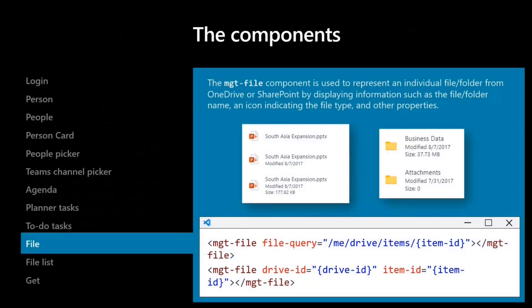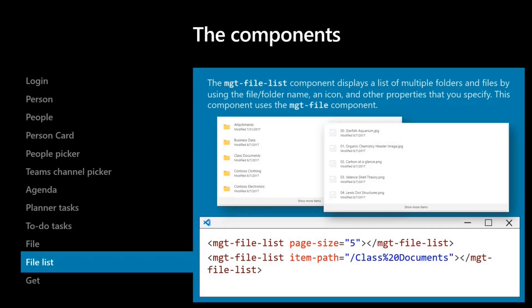Today we will be focusing on two components. The first is the file component — think about how you want to display a file card or a file representation of data that lives in Microsoft 365. That document or file can come from OneDrive, SharePoint, or Teams, and can be either files or folders. We're also thinking about how we can bring multiple files together as part of the file list — bringing a full folder or building a full browsing capability to navigate OneDrive or a group list of folders.